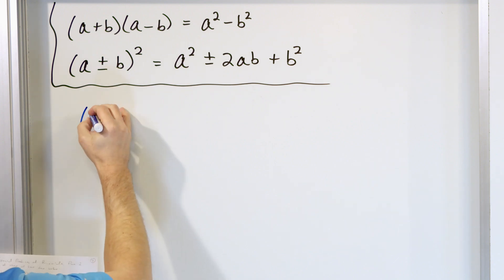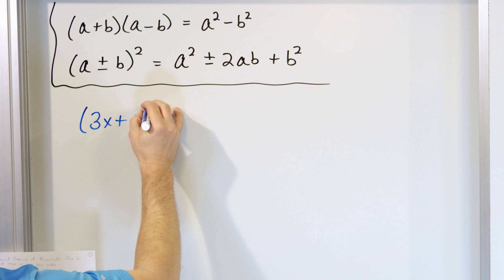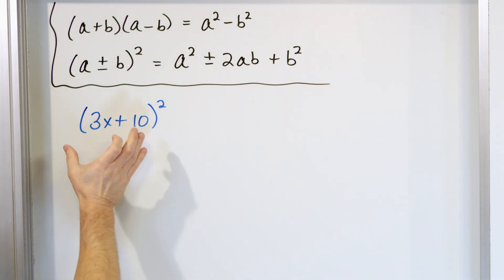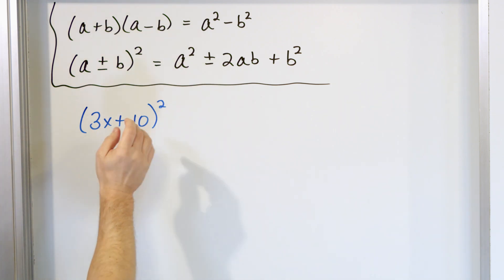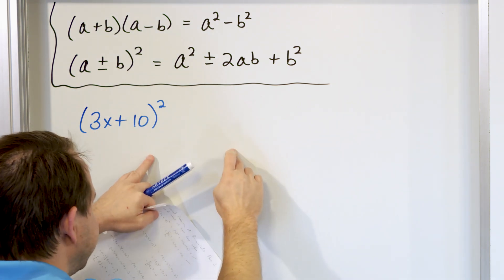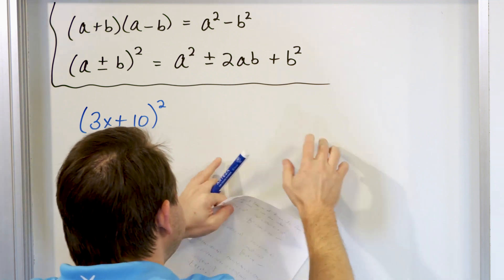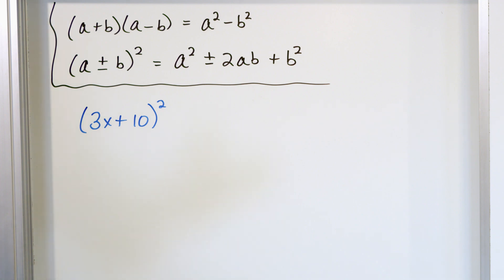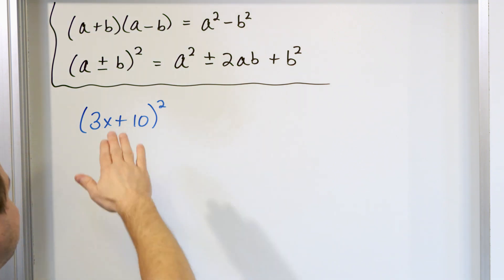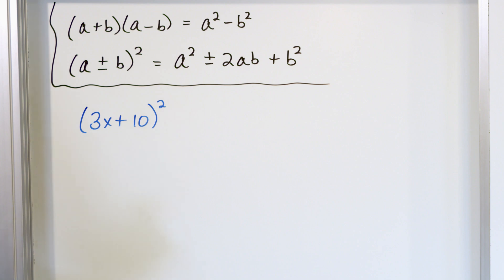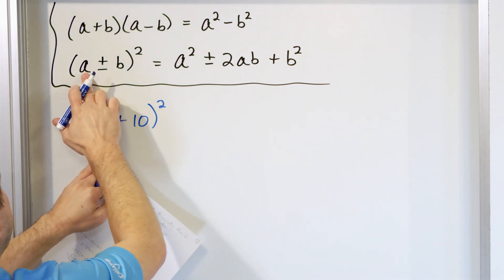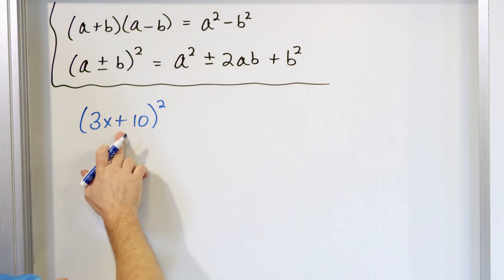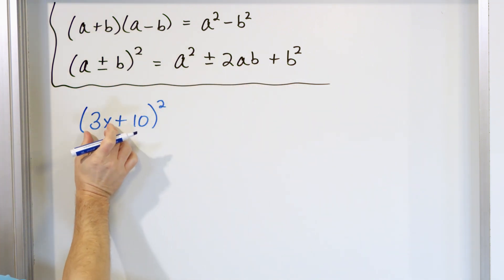What if on a test you have something like (3x + 10)²? I want to stress that you don't have to use these special product rules. (3x + 10)² can be written as (3x + 10)(3x + 10) — two binomials — and you can do the FOIL and distribute everything out and get the answer. But if you know these things, it can save you a little bit of time. We know it's a² + 2ab + b². Notice there's a plus sign here.